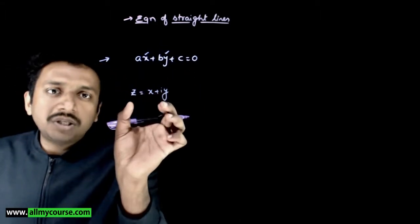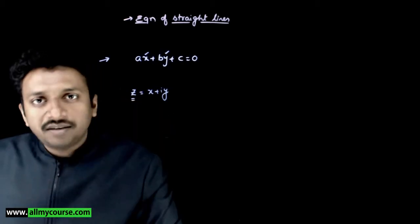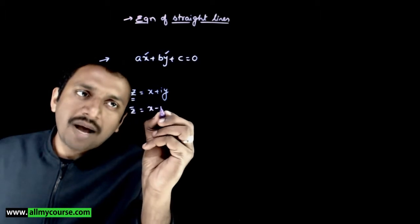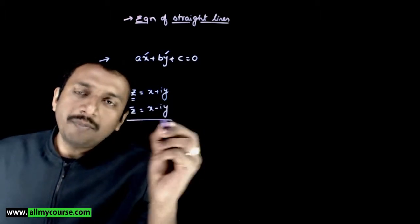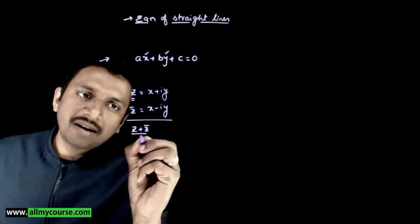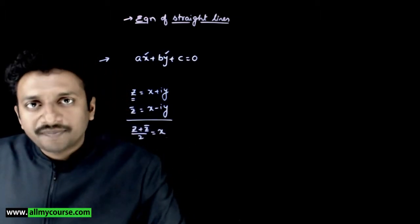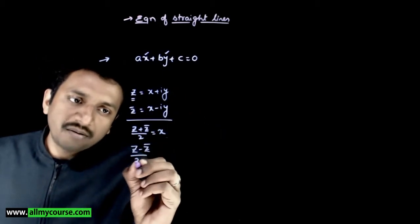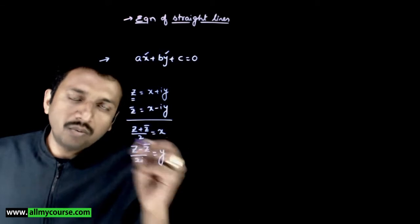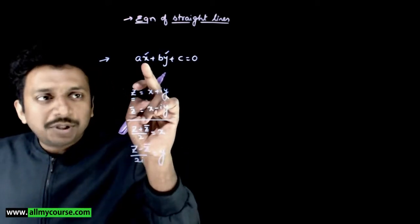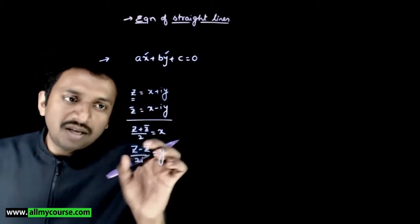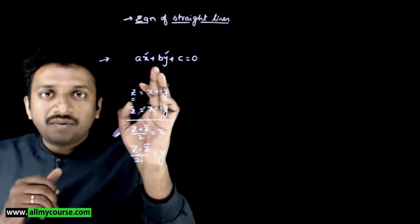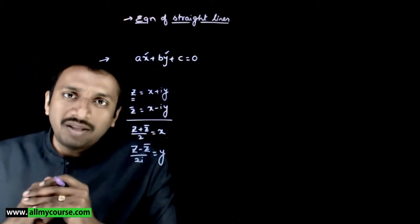If we want to convert this equation in terms of z, we note that z equals x plus iy and z̄ equals x minus iy. This implies z plus z̄ divided by 2 equals x, and z minus z̄ divided by 2i equals y. So substituting these expressions for x and y will convert the equation into the Argand plane form.